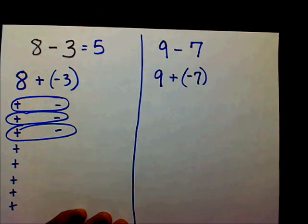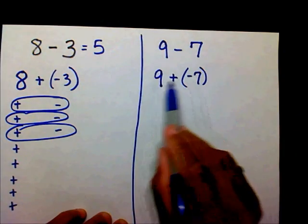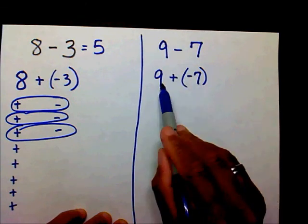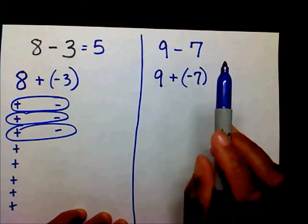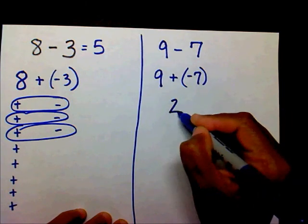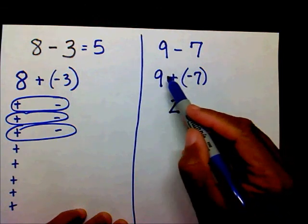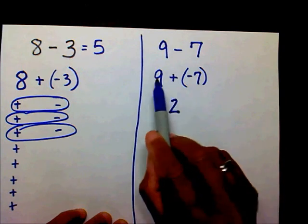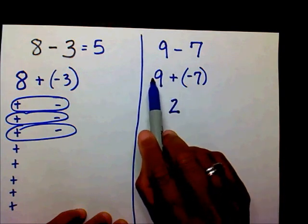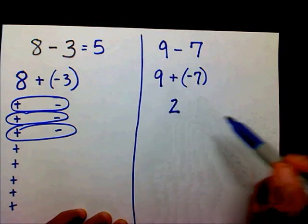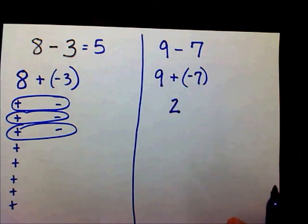And by now, you should realize that whenever you add integers with different signs, you subtract their absolute values, so 9 minus 7 is 2, and the sign of your result is the sign of the largest absolute value. So the absolute value of 9 is more than the absolute value of 7. So that's why my answer is 2. If you don't understand this, please watch my video on adding integers.